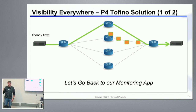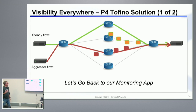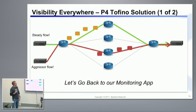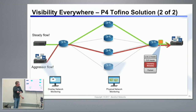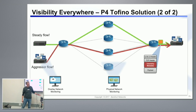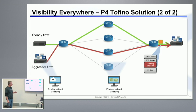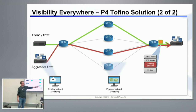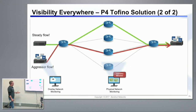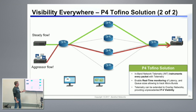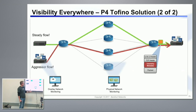So if we go back to the killer app — visibility everywhere — with Tofino we have the ability to insert telemetry data into every packet at every hop in the network. With inband network telemetry, every hop can contribute to building the history of the flow. That packet can then be sent to a physical monitoring device where you can fundamentally collect a lot of statistics.